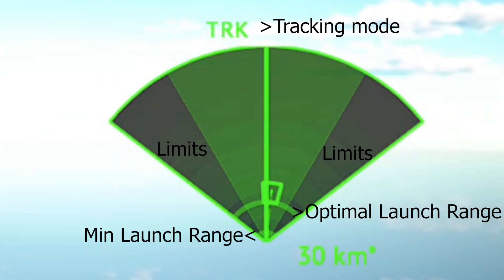When you lock a target, the radar mode at the top changes from 'search' to 'tracking' automatically. The green triangle represents the limits of the radar — if the target goes past those limits left or right, you'll likely lose the lock. We also have two curved lines on the PPI showing minimum launch range and optimal range for the missile you're using.